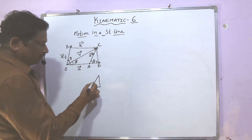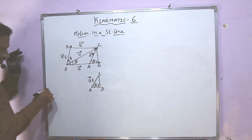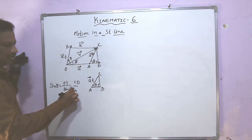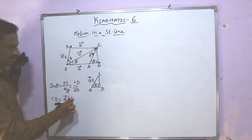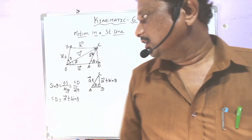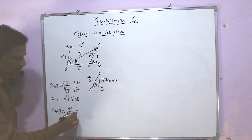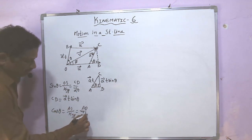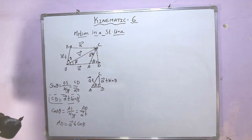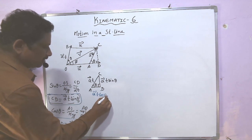In this small triangle, there is a right angle. Taking sine theta: sine theta equals opposite side over hypotenuse, so CD equals Ā·T·sin(theta). Taking cos theta: cos theta equals adjacent side over hypotenuse, so AD equals Ā·T·cos(theta). Remember both these results.